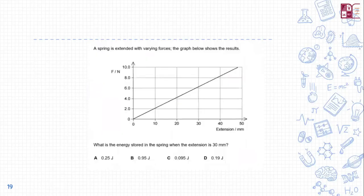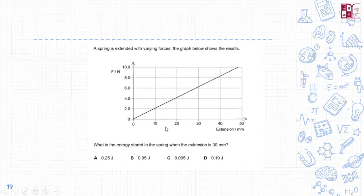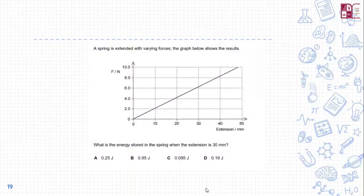Question 8: A spring is extended with varying force and a graph is plotted. What is the energy stored in the spring when the extension is 30 mm? At 30 mm the force reads approximately 6.2–6.4 N from the graph. Using the elastic potential energy formula — ½kx² where k is the spring constant and x is the extension — you can calculate the stored energy.